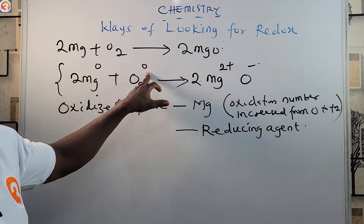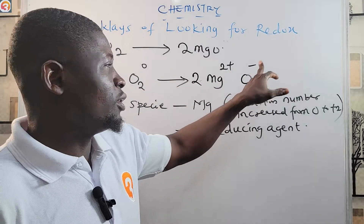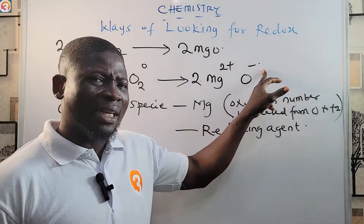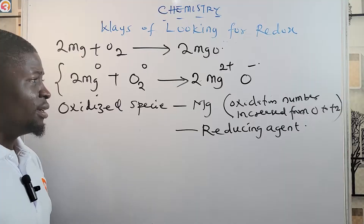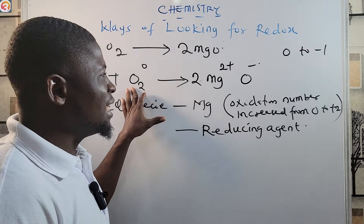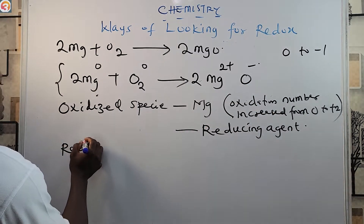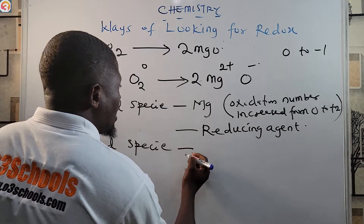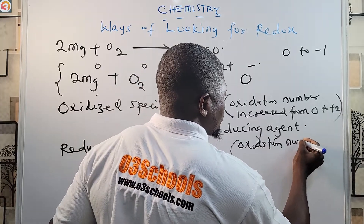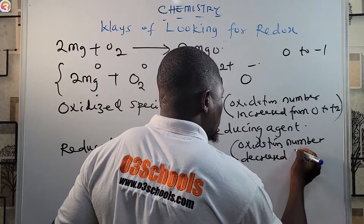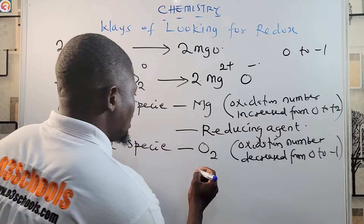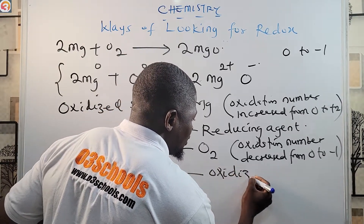Oxygen was in the free state with oxidation number 0, and in the product it becomes O²⁻ with oxidation number −2. That is a decrease from 0 to −1 (−2), so oxygen is the reduced species and therefore oxygen is the oxidizing agent.